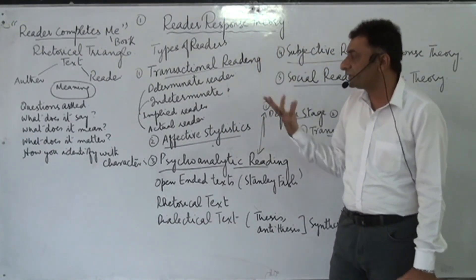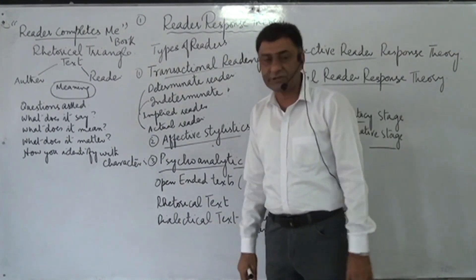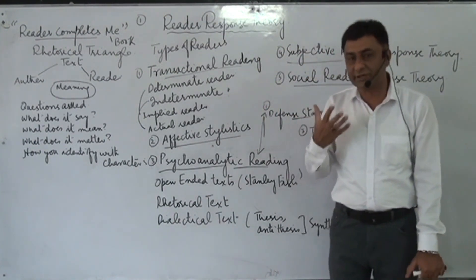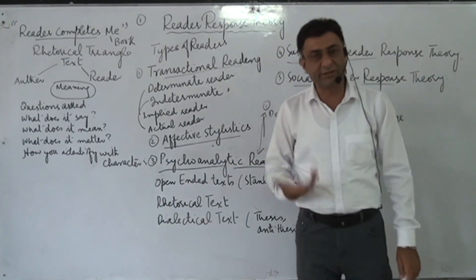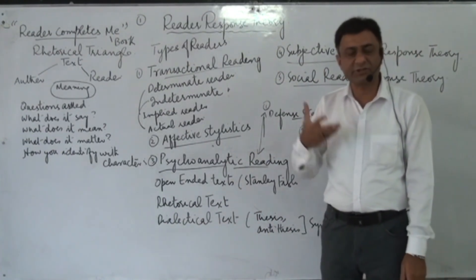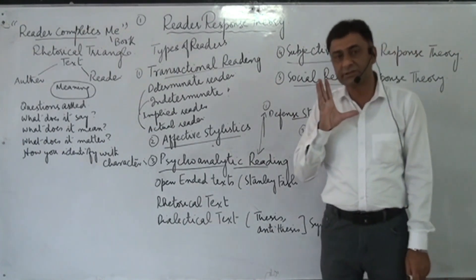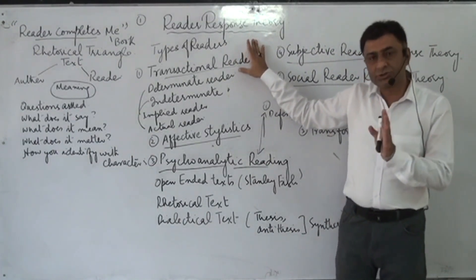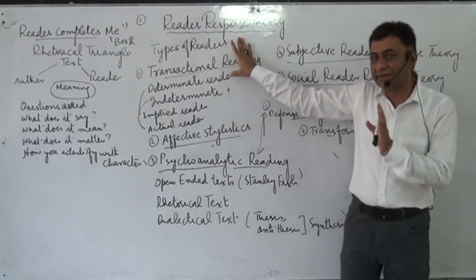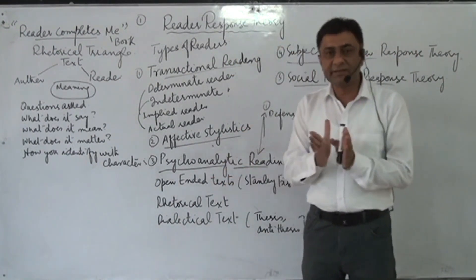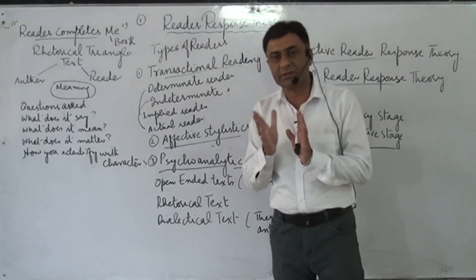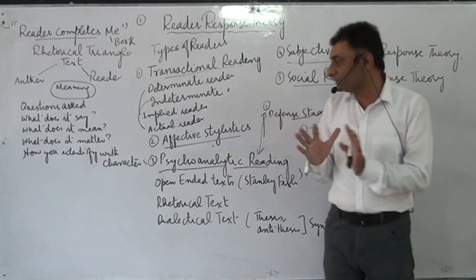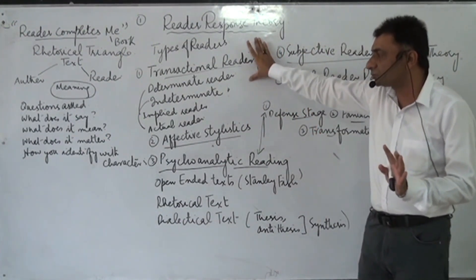There are different types of reading responses. The first is transactional reading — something related to giving and taking. Whenever a reader reads a text, he brings his own personal feelings, emotions, thinking patterns, sociological and cultural behaviors, and familial background. The text also contains the emotions, feelings, and social-cultural background of the writer. There is thus a transaction of emotions and feelings — giving and taking — between the reader and the text.